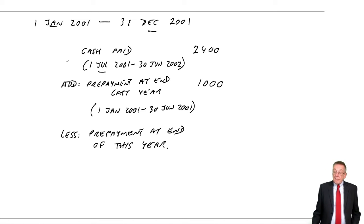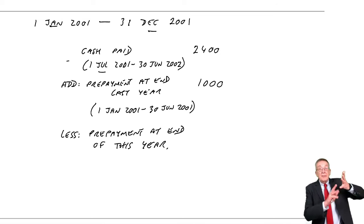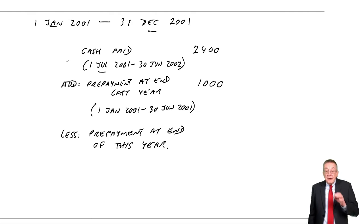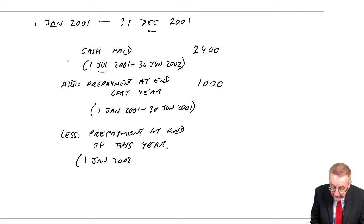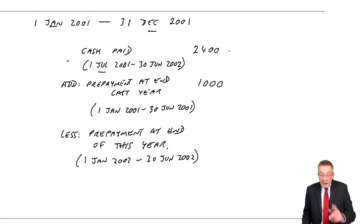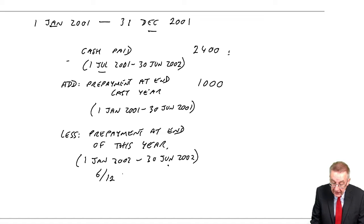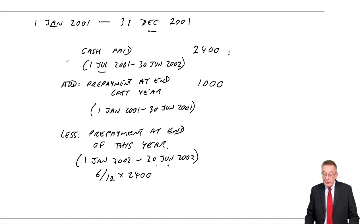However, one other thing—although that's the first six months, the cash paid was for 12 months: the six months to the end of December our year, but also we've overpaid again six months, the first six months of 2002. So we need to take out the prepayment at the end of this year. We've paid for 1st January 2002 to 30th June 2002. That was part of that $2,400, but the period January to June 2002 is not part of this year's expense.